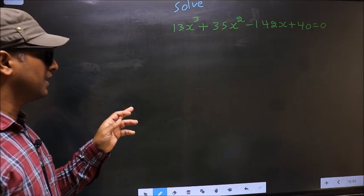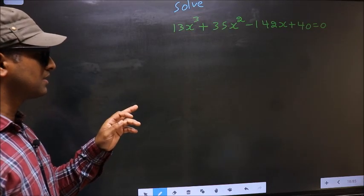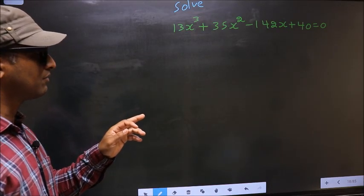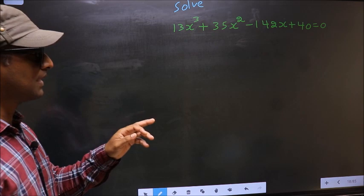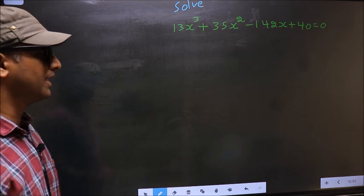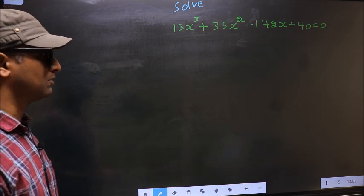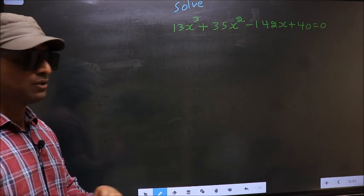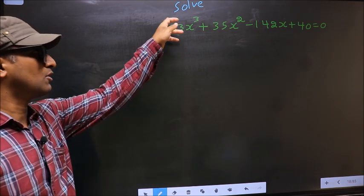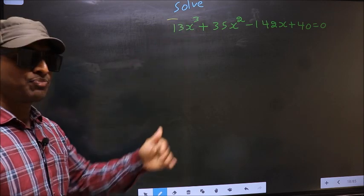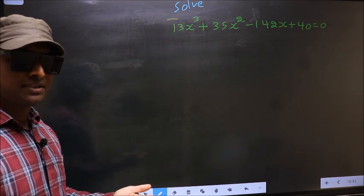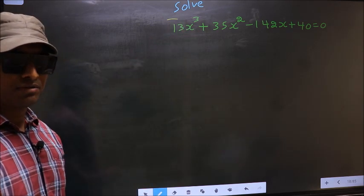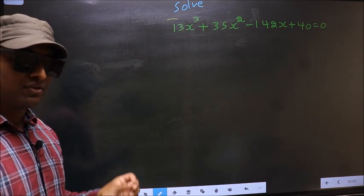Solve 13x³ + 35x² - 142x + 40 = 0. They told us to solve, which means we should get the values of x.